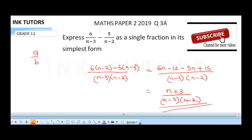This is the simplest form. It's a single fraction as a over b, where a is the numerator n plus 3 and b is the denominator. So this is a single fraction in its simplest form.